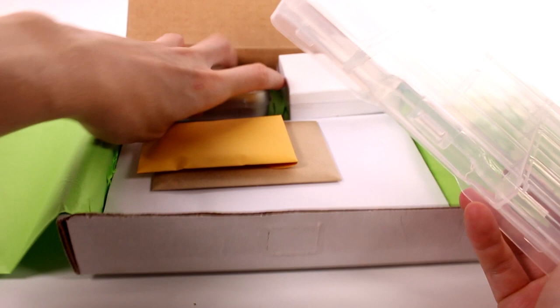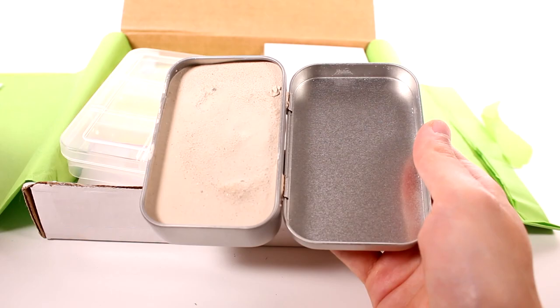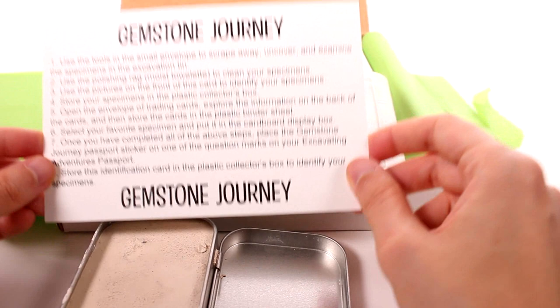Now we do have, basically what we're gonna do is we have this little tin. And this little tin has stuff that we have to dig through so that we can find some gemstones. And then of course this is our little guide here. Let's see if this says anything. This just gives us instructions.